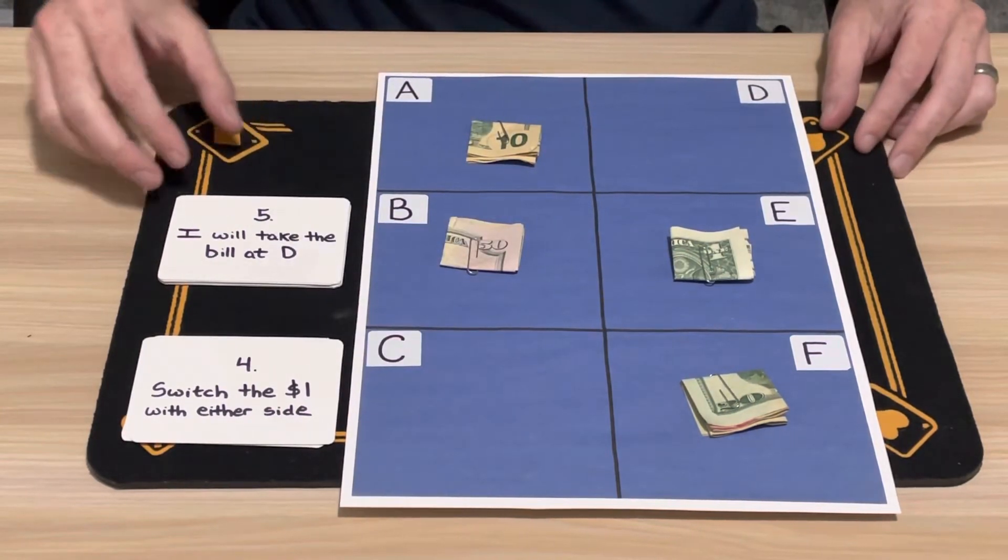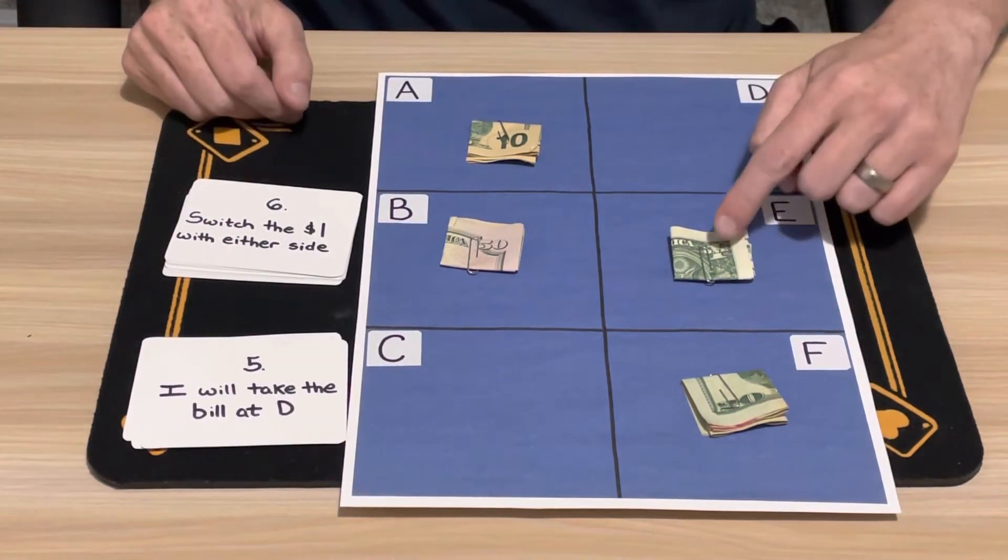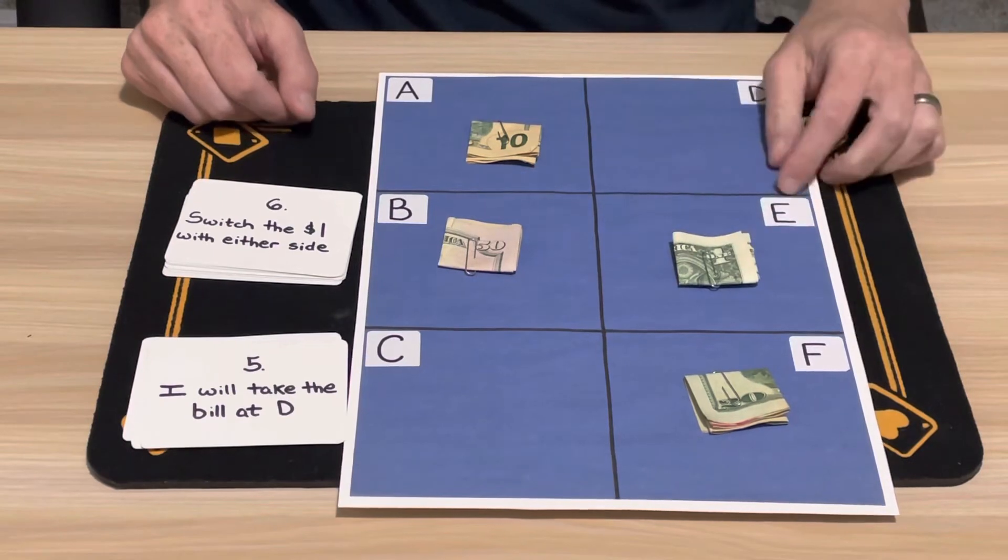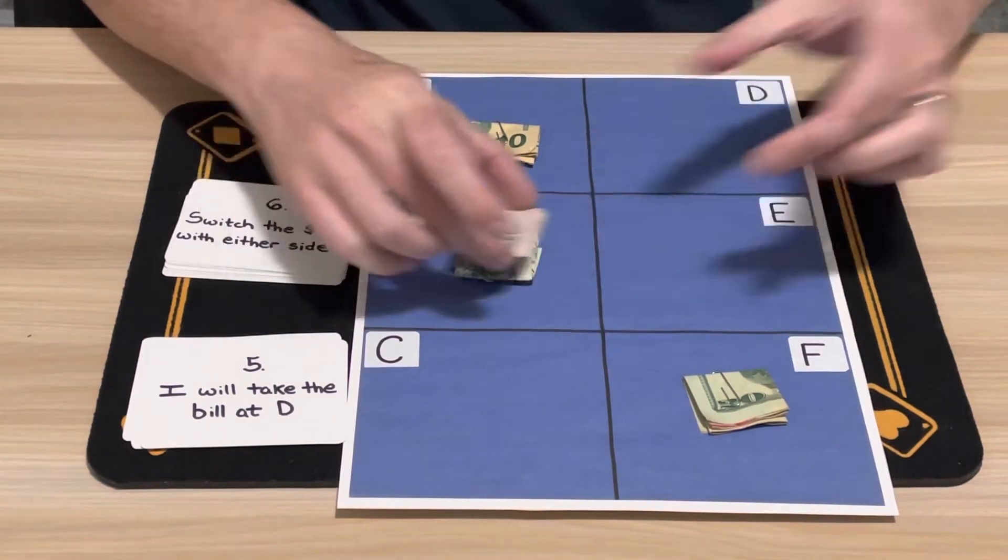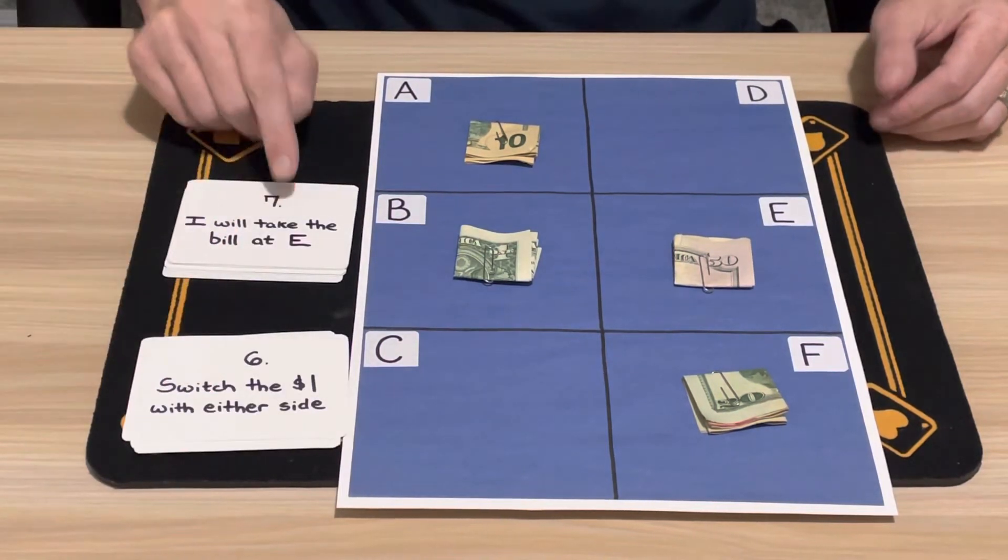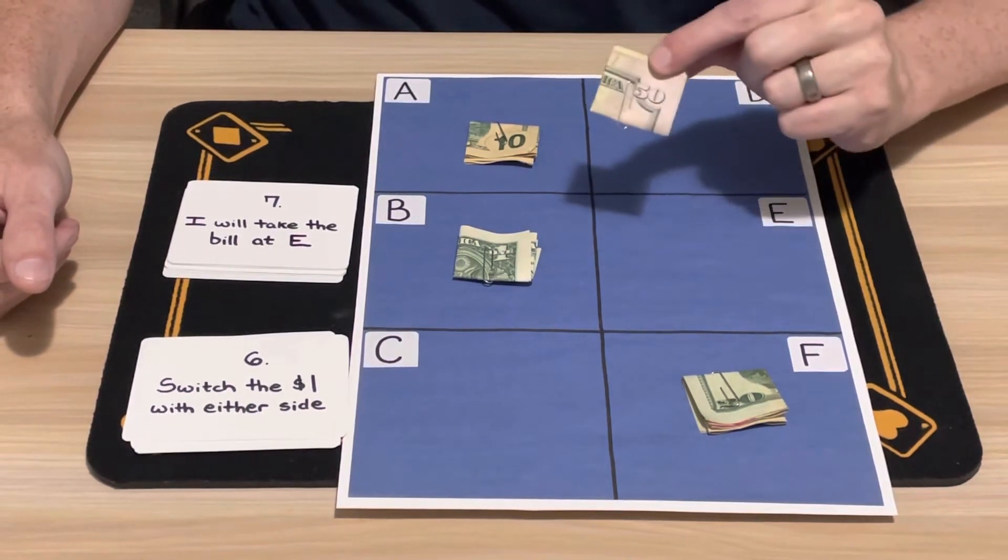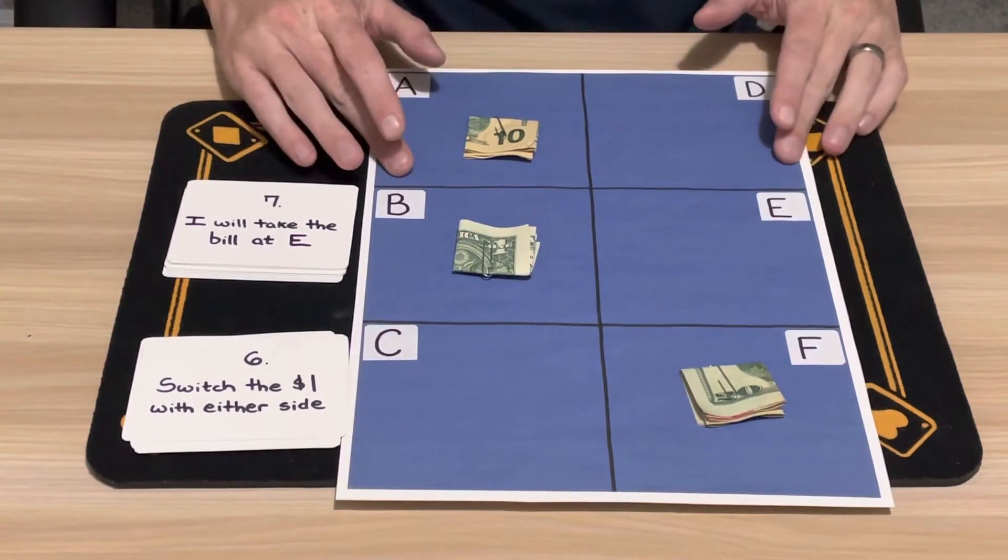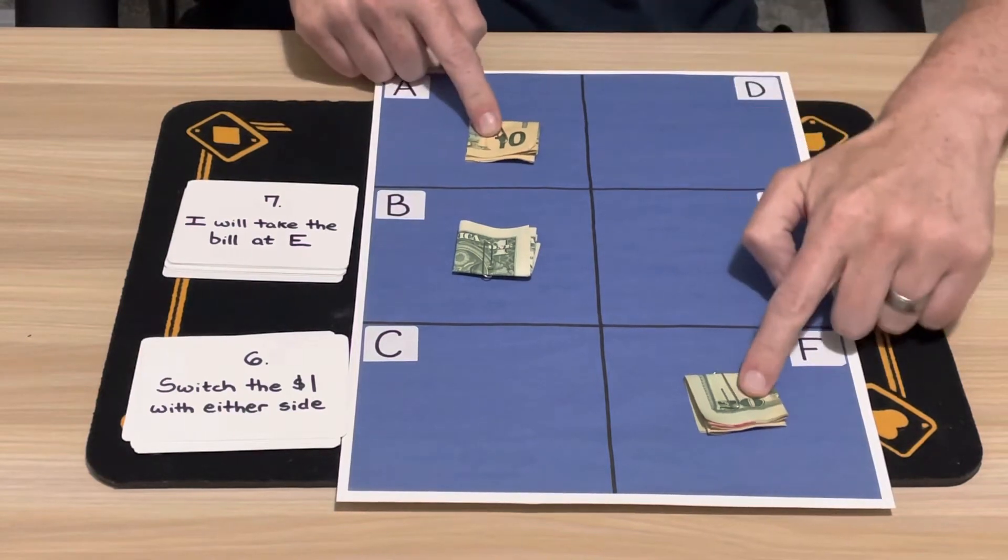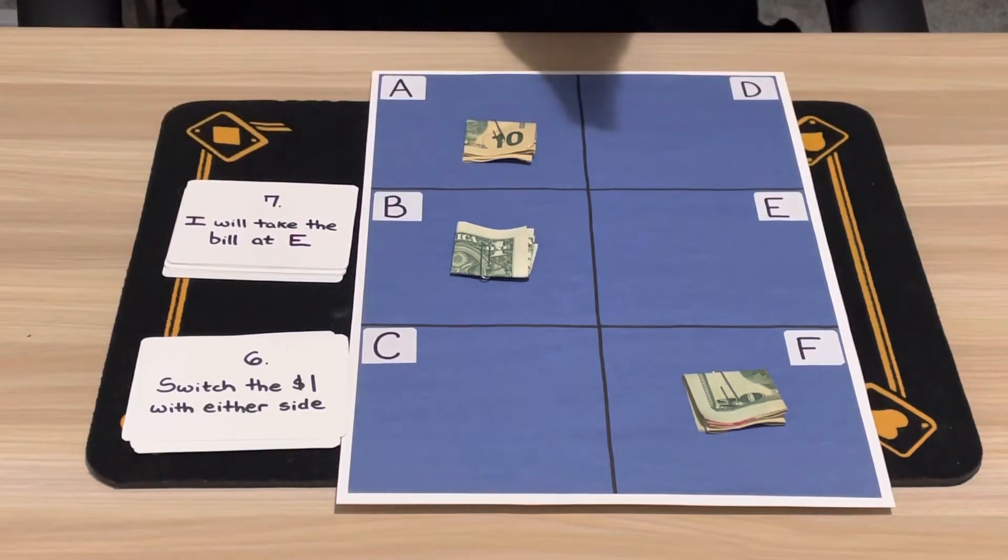Step six: switch the $1 bill again with either side. So there's no bill up here. They could switch it down here with the $20 or across with the $50. Let's say they switch it with the $50. Free choices, all of these. Step seven: I will take the bill at E, which is the $50. That is off the table now as well. Very sorry, but you know what, all is not lost. We've got the $10 bill and the $20 bill. You can still walk away potentially with $30 in your pocket.